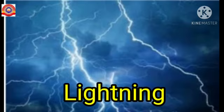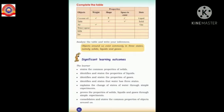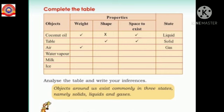We have now finished our seventh chapter. It's time for doing the activity given in your textbook on page number 82. You have to complete the given table — objects are provided, and you have to identify the properties of those objects and write down the state of each. Will you do it? Okay, dears, it's time for winding up. Thank you.